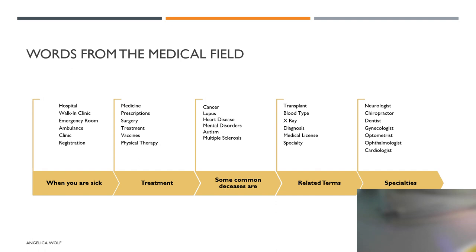Let's go over some words from the medical field. When you are sick you normally go to the hospital, a walk-in clinic, or an emergency room. Sometimes you are taken by an ambulance. When you go to the clinic you have to go to registration and fill out paperwork — your name, your birth date, what you are there for, what's bothering you. The walk-in clinic in the US is like a doctor's office but you don't have to make an appointment in advance — you can just walk in. Sometimes they give you medicine from their office, or a prescription to go to the pharmacy.